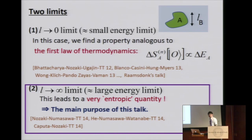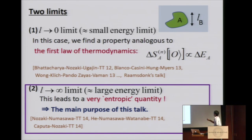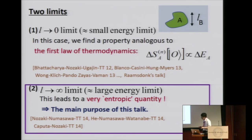Let me explain the limits we'd like to take. The first limit is called the first law of entanglement entropy, related to Raamsdonk's talk yesterday — this is the L goes to zero limit, where L is the size of the subsystem. In that case delta S_A is proportional to the energy, and in the n=1 case it's related to energy density. We are not so interested in this case. We are really interested in the opposite limit: L goes to infinity, the very large subsystem size, or large energy limit. This is the main purpose of this talk — what is the behavior of this quantity?